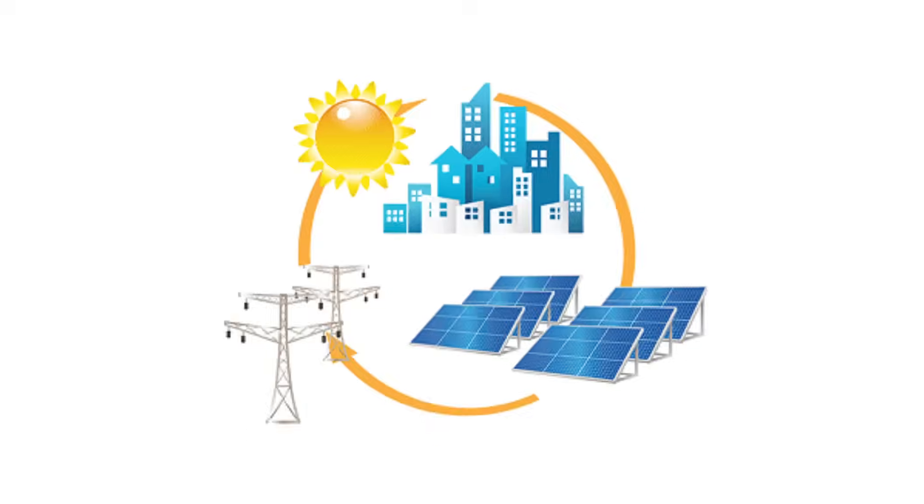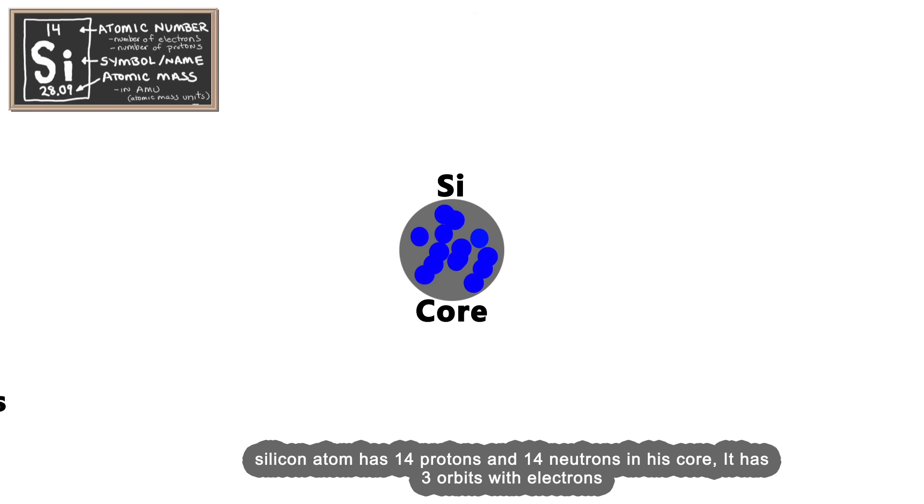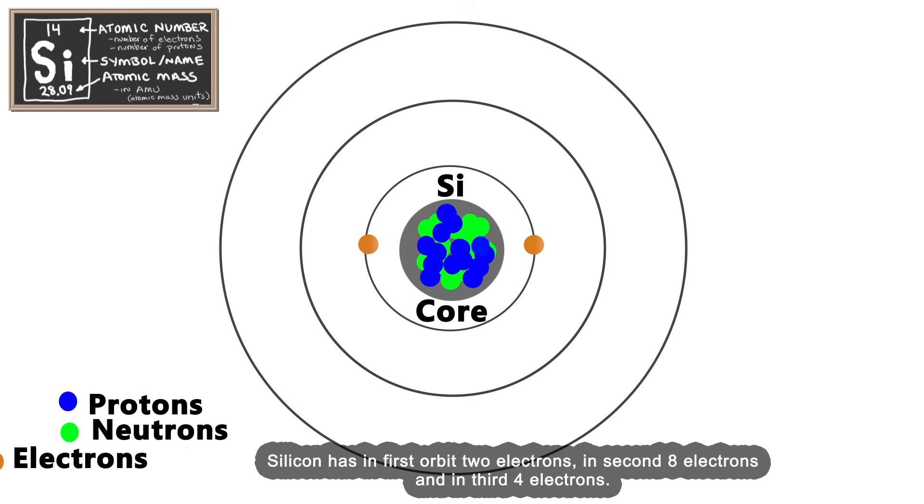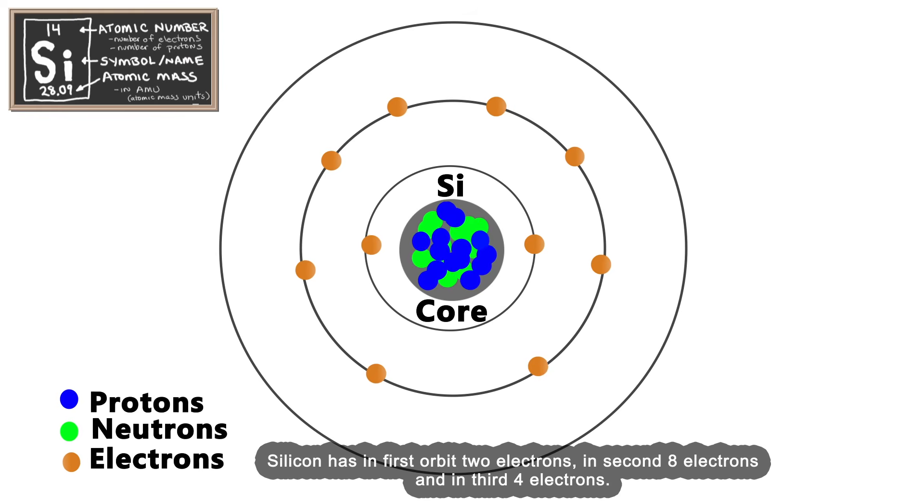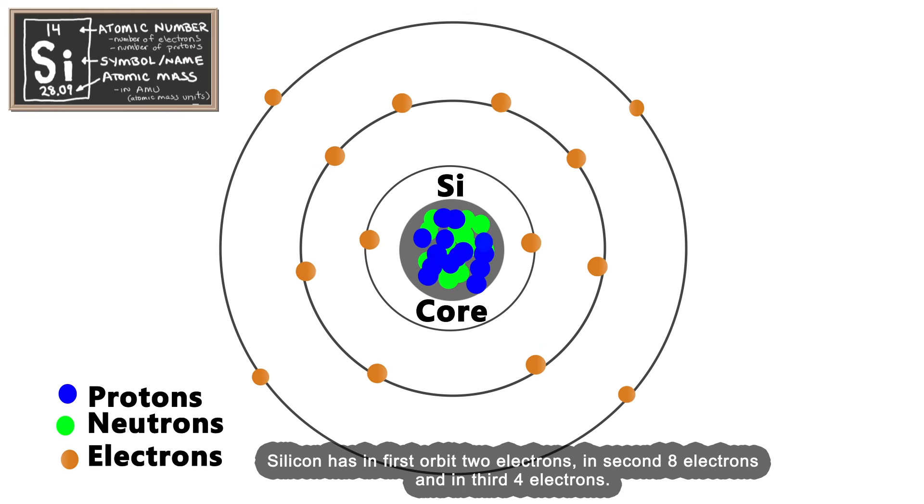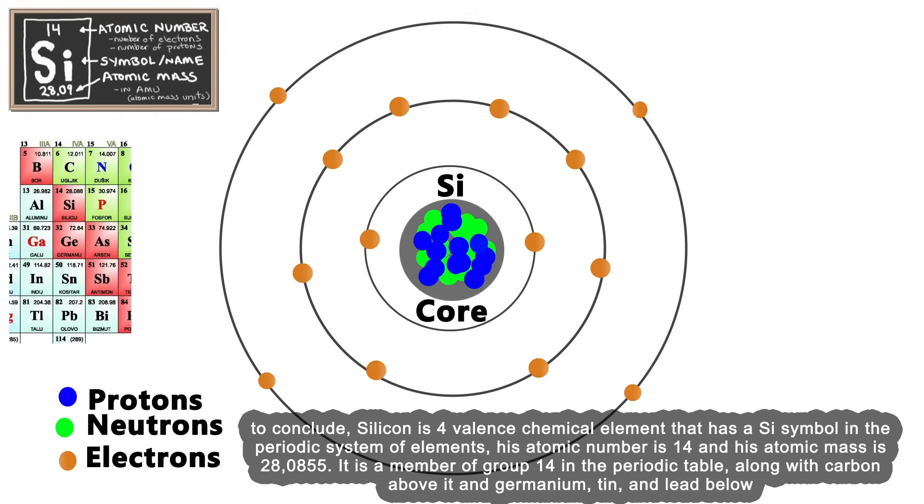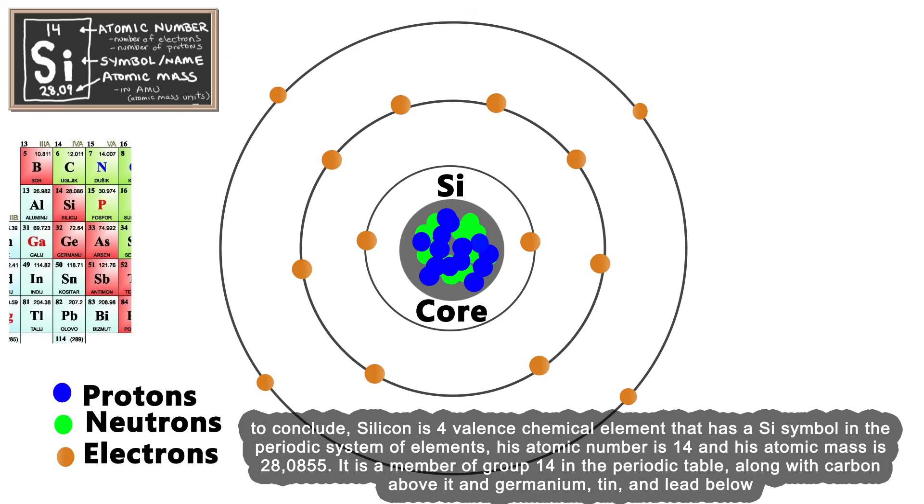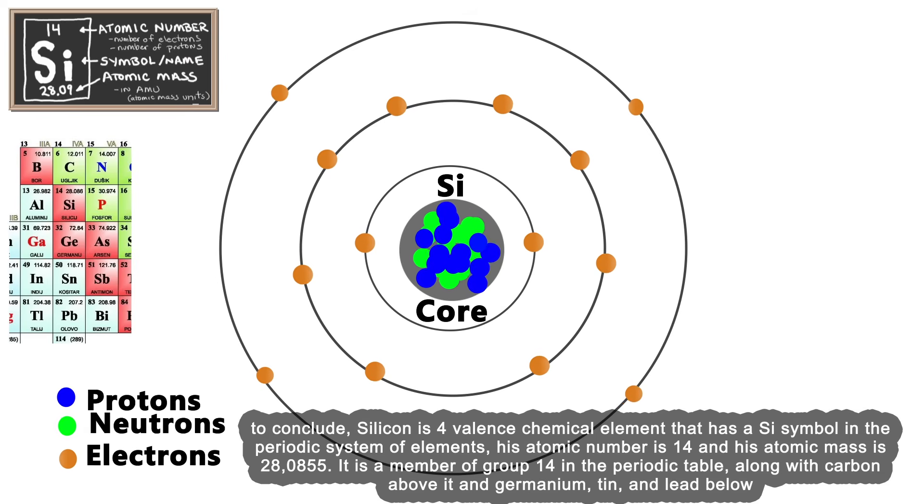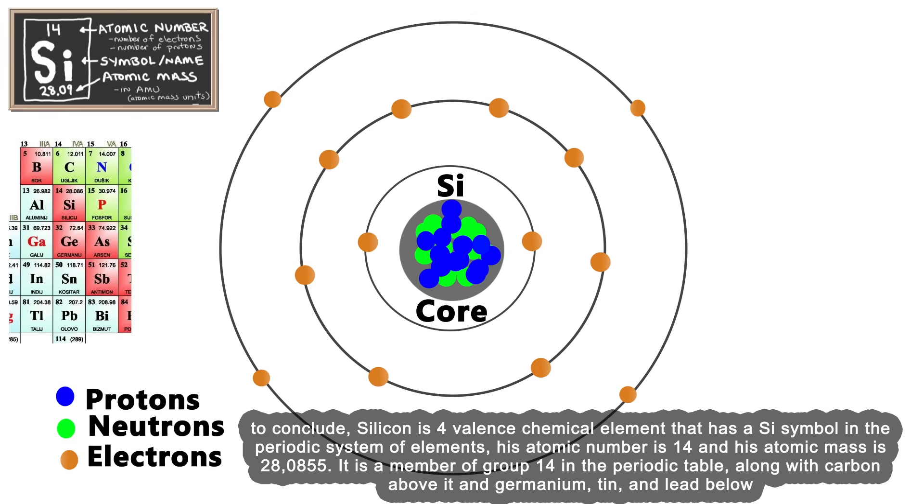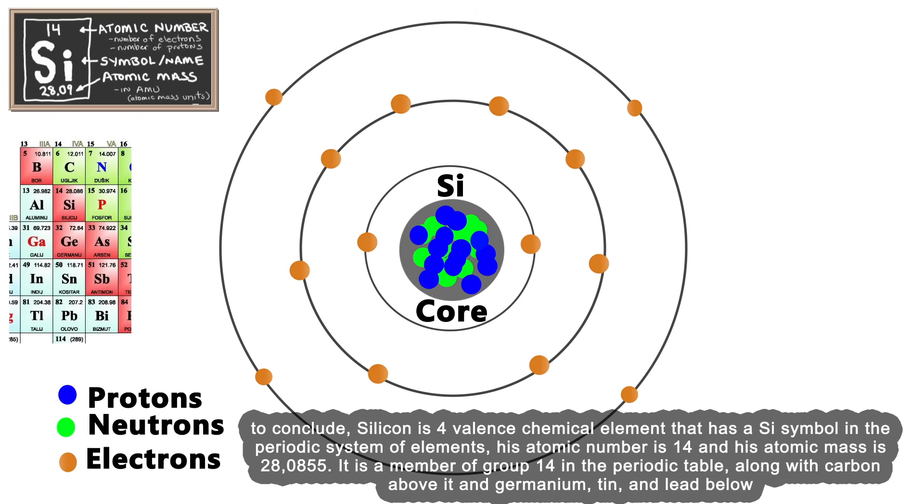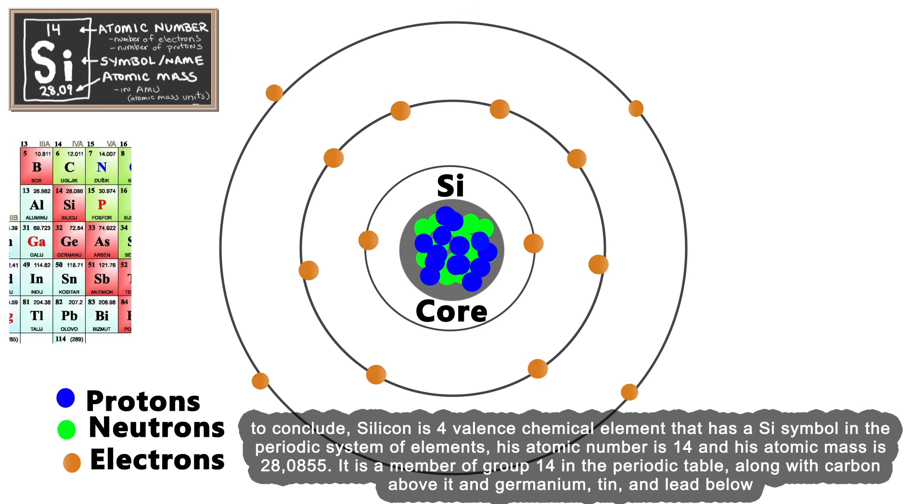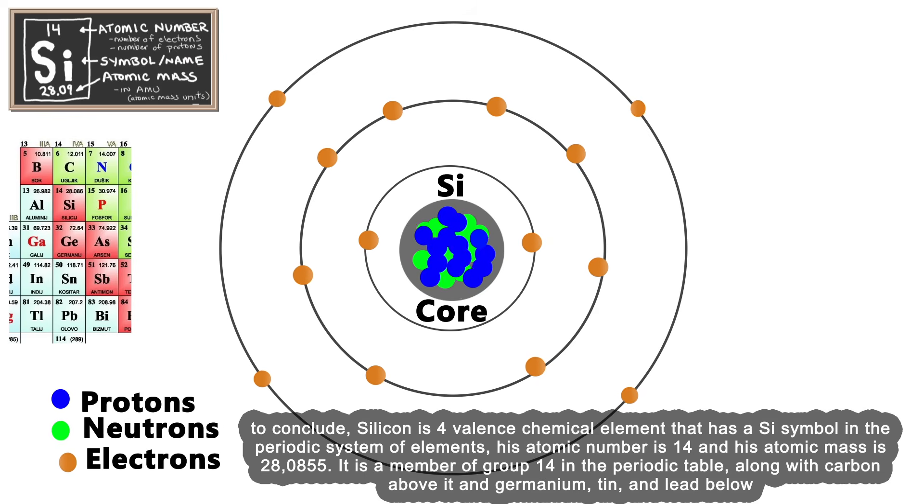First we must learn what is the photoelectric effect. Silicon atom has 14 protons and 14 neutrons in its core. It has three orbits with electrons: in the first orbit two electrons, in the second eight electrons, and in the third four electrons. Silicon is a four-valent chemical element with symbol Si in the periodic system. Its atomic number is 14 and its atomic mass is 28.0855. It is a member of group 14 in the periodic table.